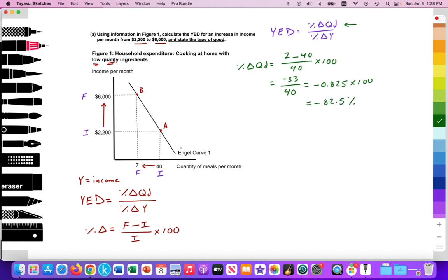So here we see that the percent change is 82.5%. So the quantity of meals has decreased by 82.5%. So that is the value of the change in the quantity.